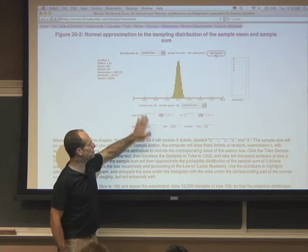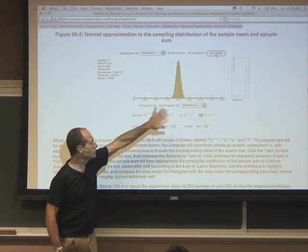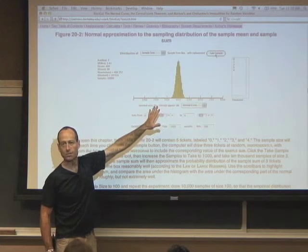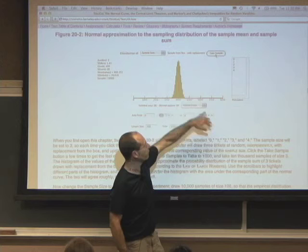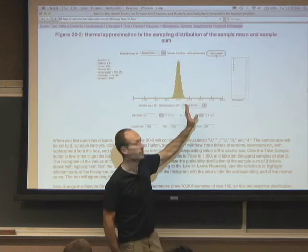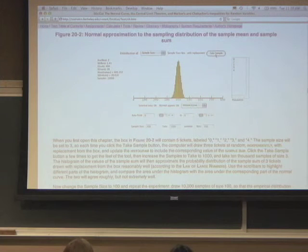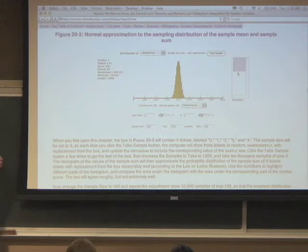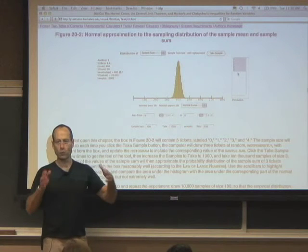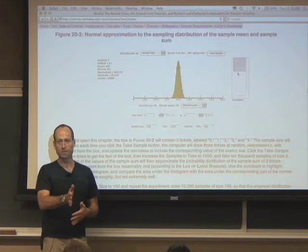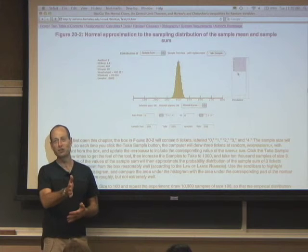Now, how good the approximation is depends on the numbers that are in the box. So in this particular case, the numbers in the box have a nice uniform distribution: 0, 1, 2, 3, 4. The approximation wouldn't be as good if the distribution were really skewed, right? If I'm trying to approximate something with a normal curve, the normal curve is symmetric, right? It's not going to approximate something that's skewed very well.